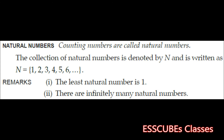What are natural numbers? Natural numbers are the counting numbers — for example, 1, 2, 3, 4, and so on. The least natural number is 1. There are infinitely many natural numbers and the collection of natural numbers is always denoted by capital N. This is a convention.